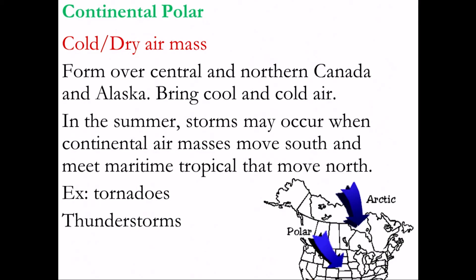Continental polar forms over land and is dry. Polar means it's cold, so continental polar tends to form up north over parts of Canada and the northern United States. Generally, they bring cool, dry air to the central part of the United States. What happens if a continental polar air mass meets maritime tropical coming up from the Gulf of Mexico? That's when you can get things like tornadoes — in fact, that just so happens to be right around where Tornado Alley is, where this polar air mass meets the maritime tropical air mass. Even without tornadoes, you can get thunderstorms, strong winds, and a lot of rain from a cold front moving in.